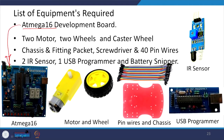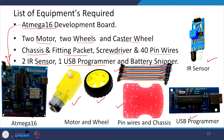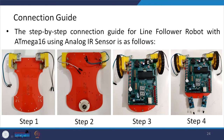The equipment required for making this line follower robot includes: an ATMEGA16 development board, two DC motors, two wheels and a caster wheel, a chassis and fitting packet, a screwdriver, 40-pin wires, two IR sensors, one USB programmer, and a battery with connector.